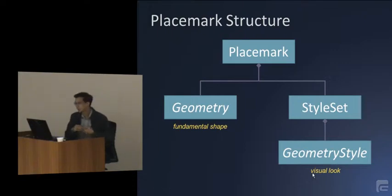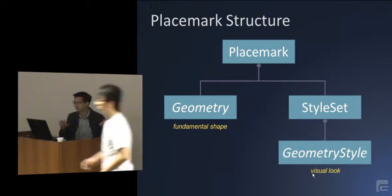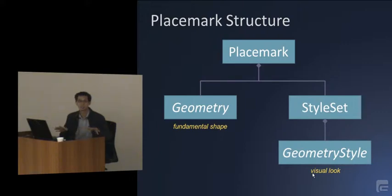So the geometry style controls the visual look of the placemark. So you can have a point which looks like a diamond, a point which looks like an arrow, a point which looks like an icon. So the geometry is separated from the style, very similar to HTML and CSS. You can have a list, so the list is your source data. Then you can choose how to style that list, whether you use numbered bullets, squares, diamonds, what font you're using. So the style is separate. Very similarly, the geometry is the data. The geometry style is the look.